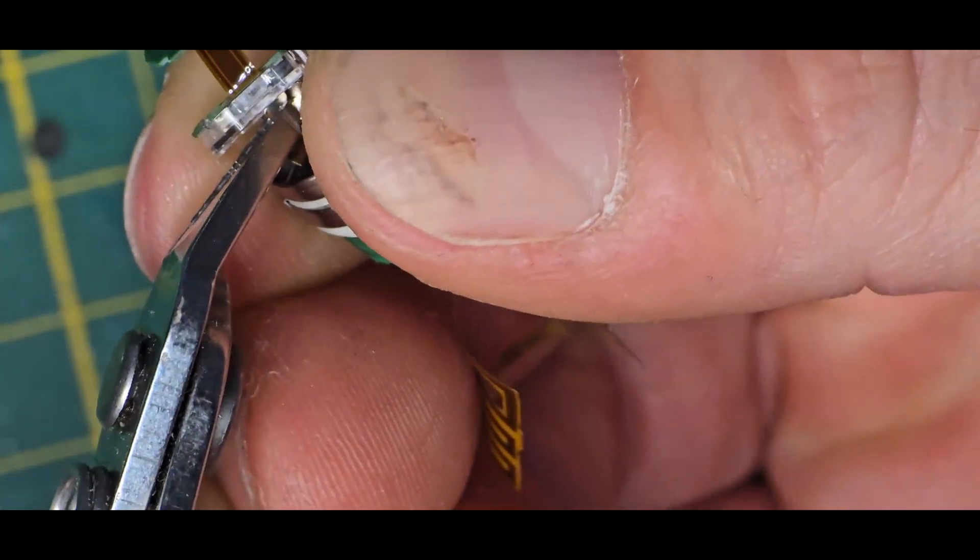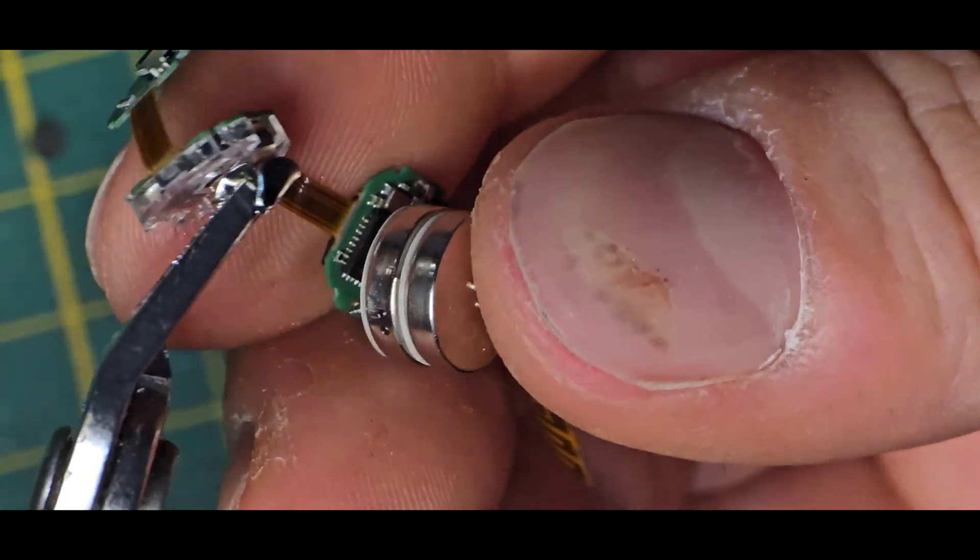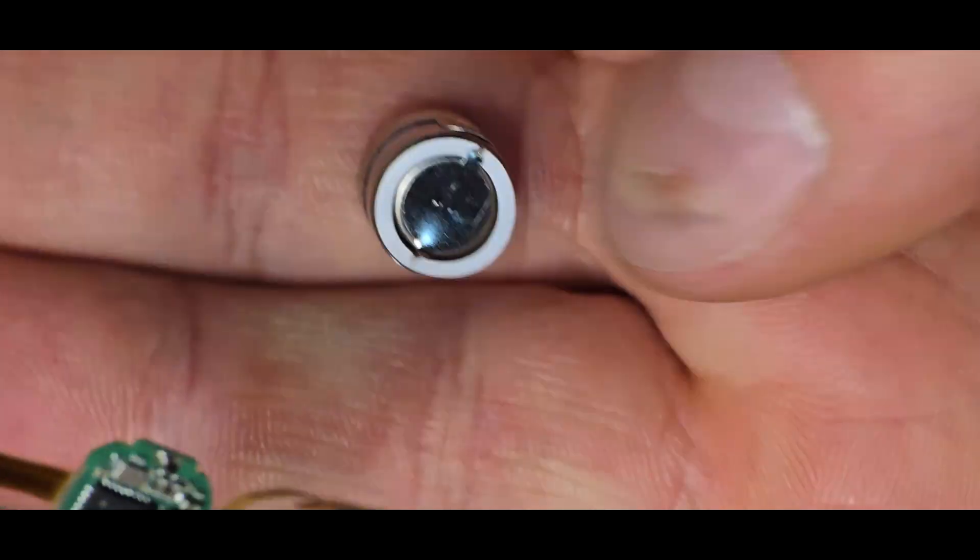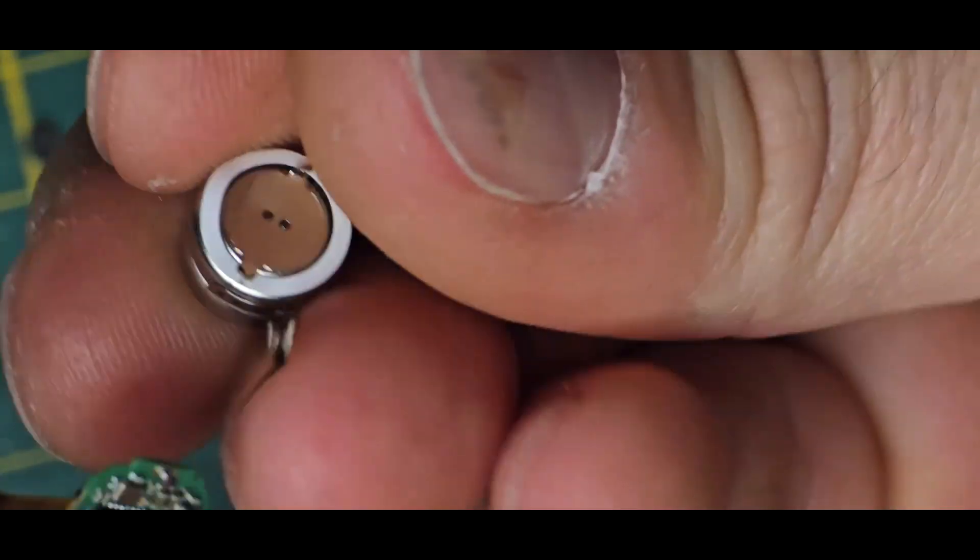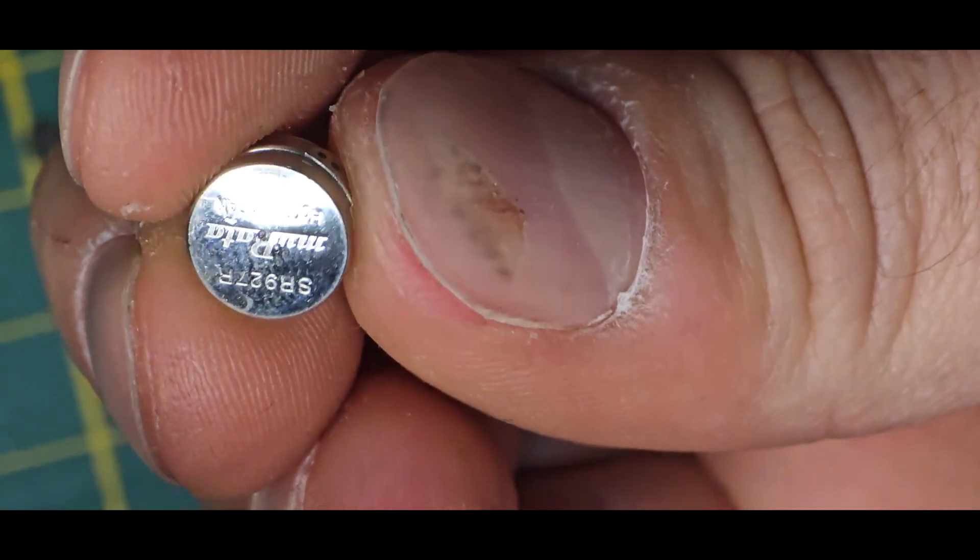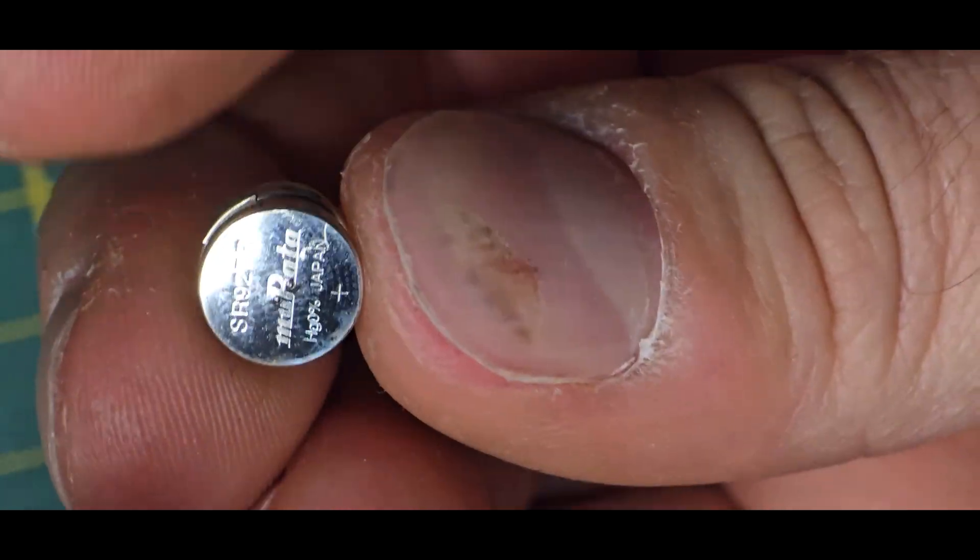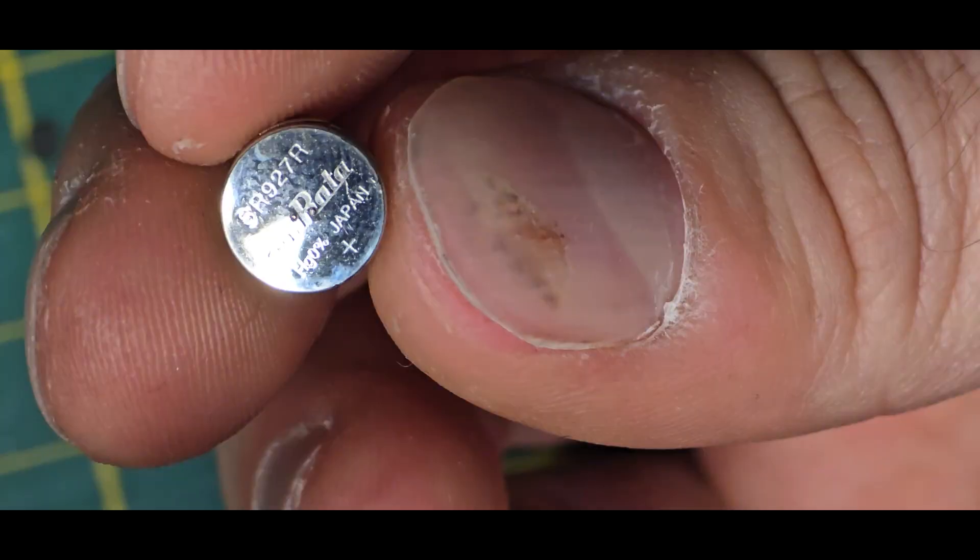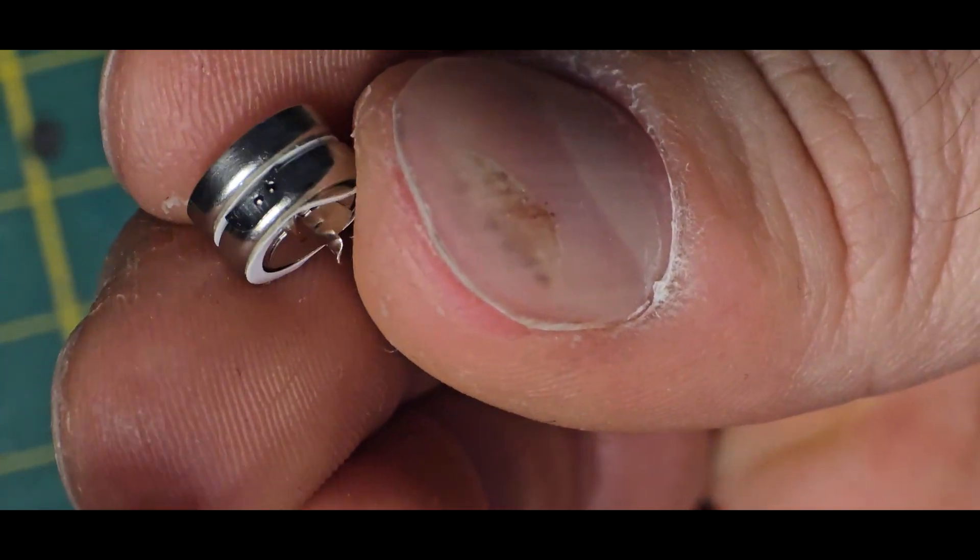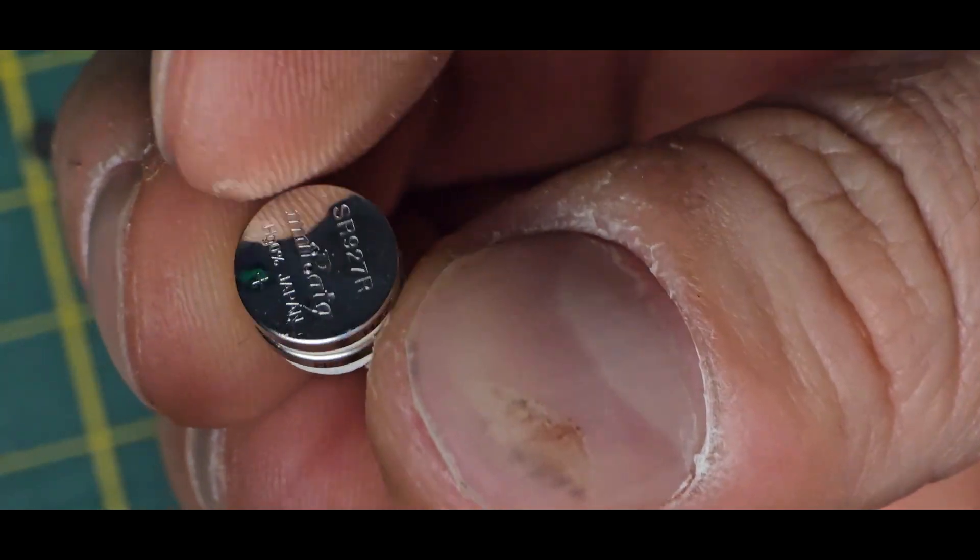So yeah let's just remove it via brute force. And there we go. So we have two coin cell batteries. So it will most likely be somewhere around 3 volts or 6 volts. Not so sure. They are in series.